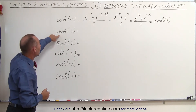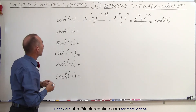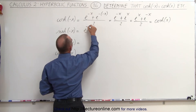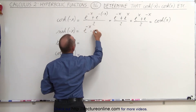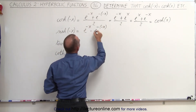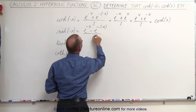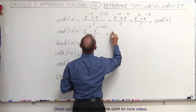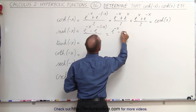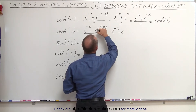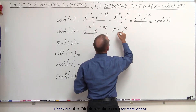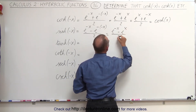Now let's go ahead and do that with the hyperbolic sine of x. So this becomes e to the minus x minus e to the minus of a minus x, divided by 2. So this becomes equal to e to the minus x minus e to the plus x, divided by 2.